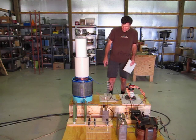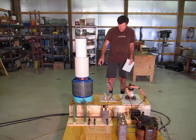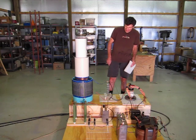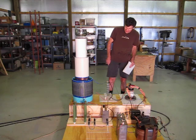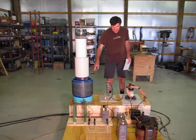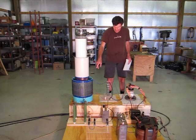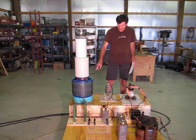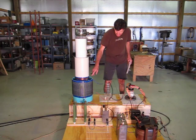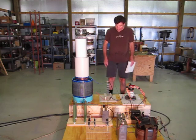The tickler coil is wound with number 22 gauge wire. There's about 35 turns here all together but it's got different taps. It's tapped on somewhere between 15 and 20 turns there.